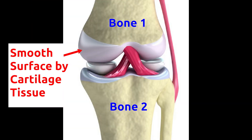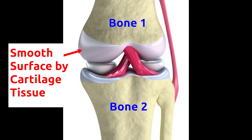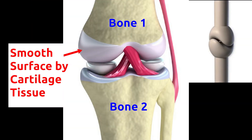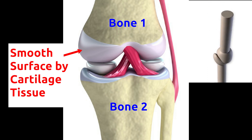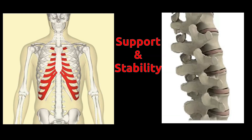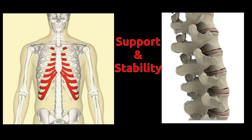Cartilage tissue smoothens the joint area of bones, and this smoothness helps in the movement of bones on one another. Cartilage tissues also provide stability and support to surrounding tissues and bones, and help in maintaining the shape of organs — because of cartilage tissue, the ear and nose stay in the same shape.